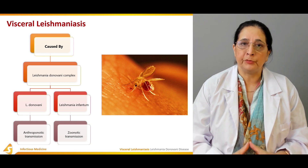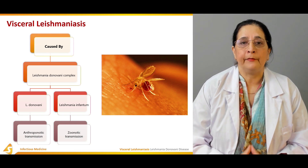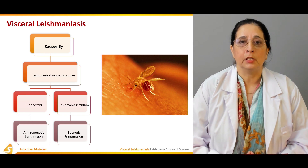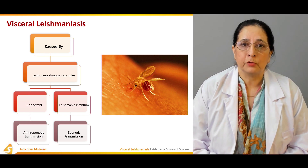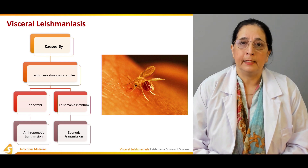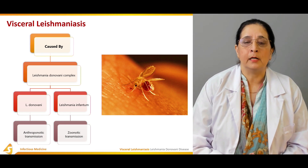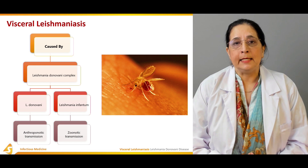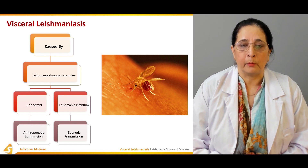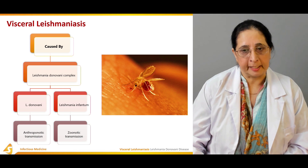In summary, visceral leishmaniasis is a chronic, fatal infection caused by a protozoan parasite, mainly involving the liver, spleen, lymph nodes, and bone marrow, and it can be very fatal.